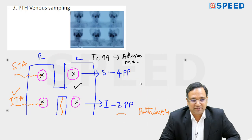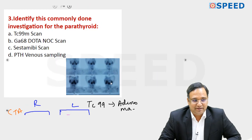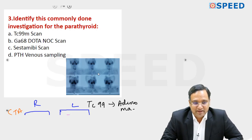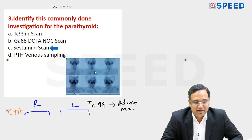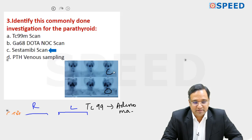Coming back to the answer: this is a Technetium-99 sestamibi SPECT scan, and the answer is Option A. Here you can see the adenomatous tissue in the parathyroid gland clearly identified on the image.